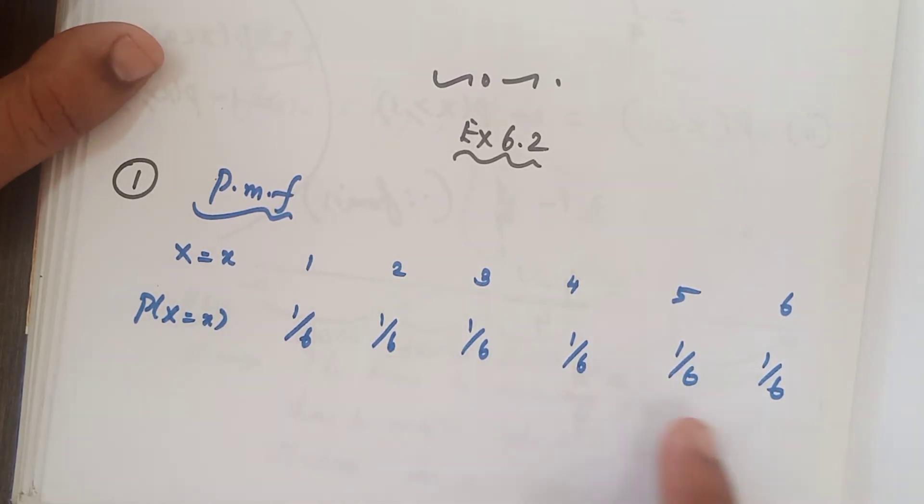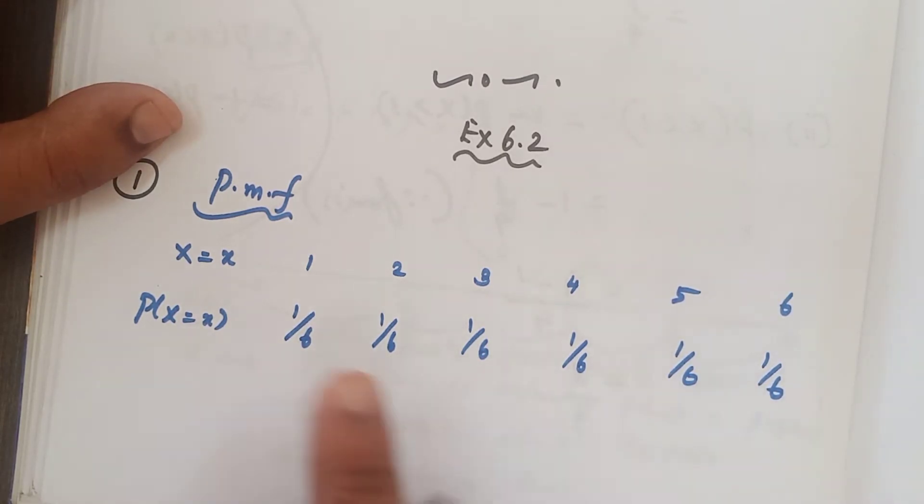You know that in probability mass function, the total probability value is 1. So if you add everything, 6 is a common denominator. If you add the numerator, we will be getting 6. 6 by 6 that is equal to 1. This is only for our verification.